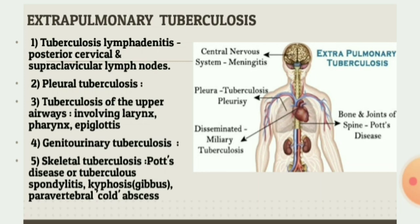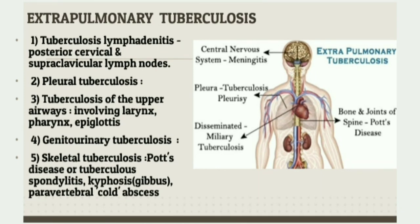Tuberculosis lymphadenitis is the most common extra-pulmonary TB, accounting for 35% of all EP TB cases. The most common sites are the posterior cervical and supraclavicular lymph nodes. It presents as painless swelling in the neck region without warmth or color change. Pleural tuberculosis accounts for 20% of all EP TB and presents as pleural effusion.